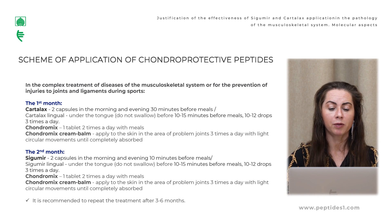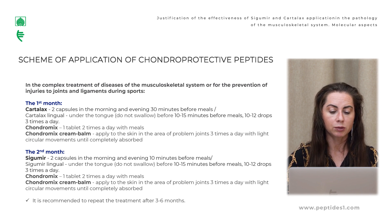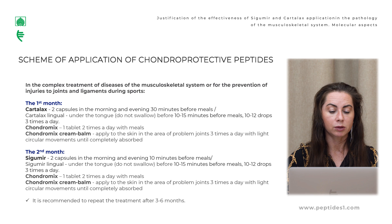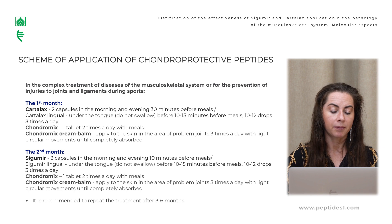We have a recommended scheme for application of chondroprotective peptides. In the complex treatment of musculoskeletal system disease or for prevention of injuries to joints and ligaments during sports: In the first month, take Cartelax 2 capsules in the morning and evening, 30 minutes before meals; or use Cartelax sublingual drops under the tongue 10–15 minutes before meals, 10–20 drops 3 times a day. Also use Chondromix one tablet 2 times a day with meals and Chondromix cream. In the second month, use the same peptide bioregulation scheme but replace the tripeptide Cartelax with the polypeptide complex Sigumir. It is recommended to repeat the treatment after 3 or 6 months.